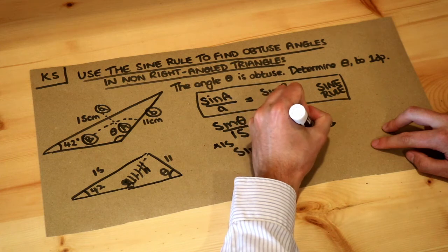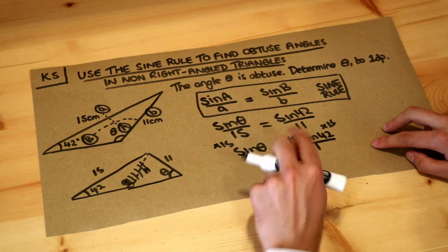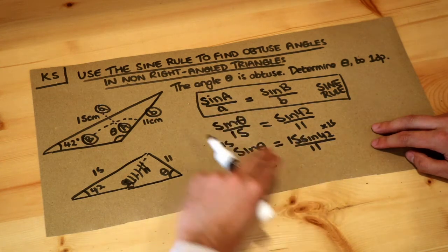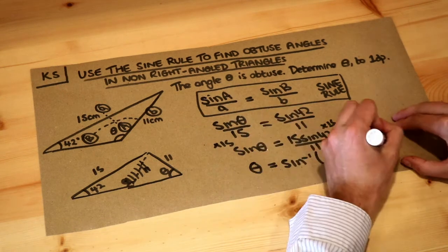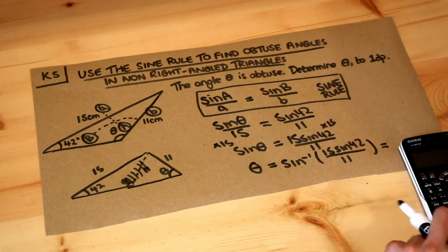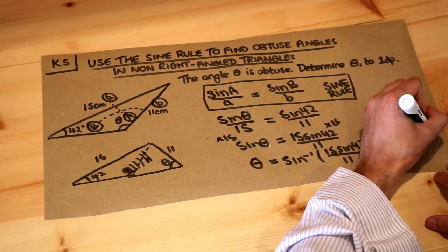And then to get rid of the sine in front of the theta, we inverse sine both sides. So inverse sine gets rid of the sine there, and then we're going to do inverse sine of this. And if we do that on our calculator, that gives us 65.846 degrees.